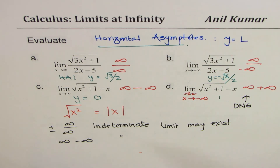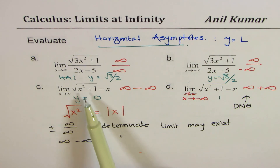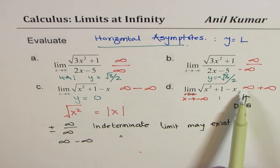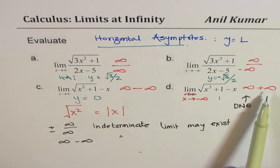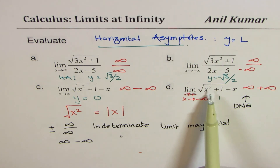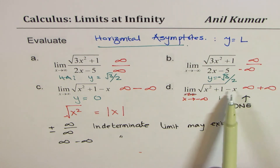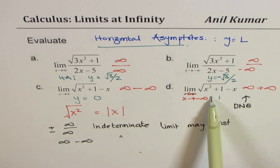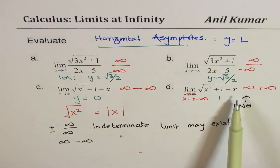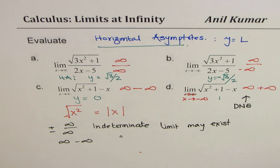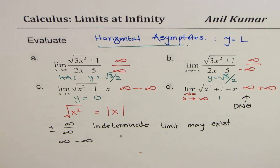For Example D, the limit does not exist. Parts C and D were handled by rationalization — for D, if you rationalize, the denominator becomes x minus x which is 0, and dividing by 0 is undefined. I hope you learned the techniques of finding horizontal asymptotes and limits as x approaches positive and negative infinity. Feel free to share your comments. If you like and subscribe, that'd be great. Thank you and all the best.